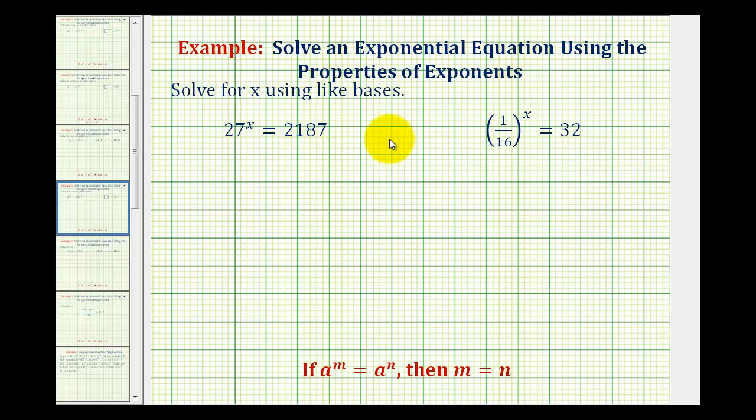We want to solve the given exponential equations by using like bases. This means you want to write both sides of the equation with the same base. If we can do this and the bases are the same, then the exponents must be equal to each other.